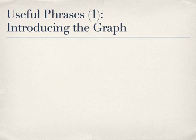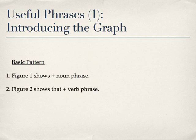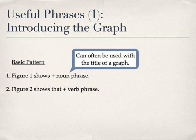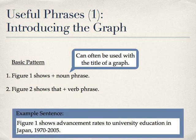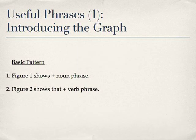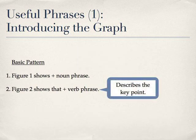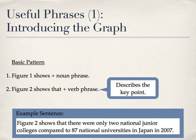First, let's learn some useful phrases for introducing a graph. Here are two basic patterns. The first pattern can often be used with the title of a graph. For example: 'Figure 1 shows advancement rates to university education in Japan, 1970 to 2005.' Notice how this part is a noun phrase, not a grammatically complete sentence. The second pattern usually describes the key information or key point of the graph. For example: 'Figure 2 shows that there were only two national junior colleges compared to 87 national universities in Japan in 2007.' Notice how this part is a grammatically complete sentence.